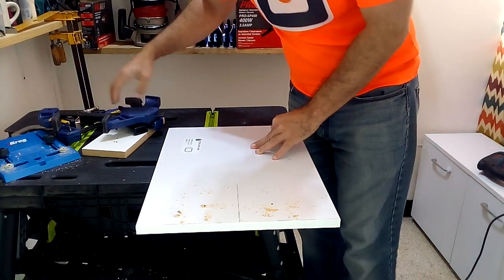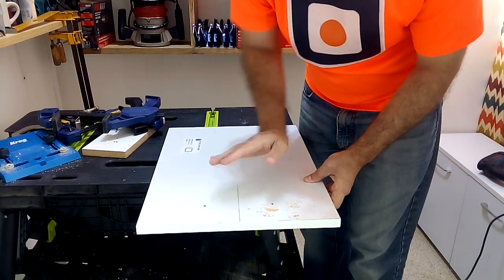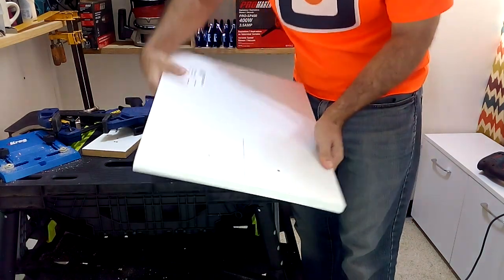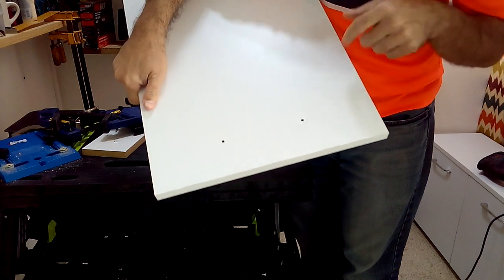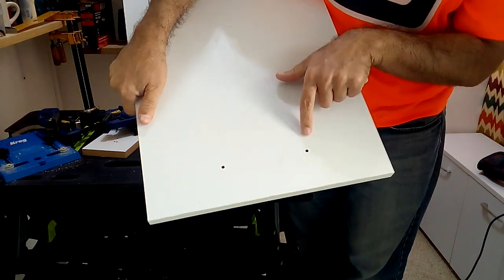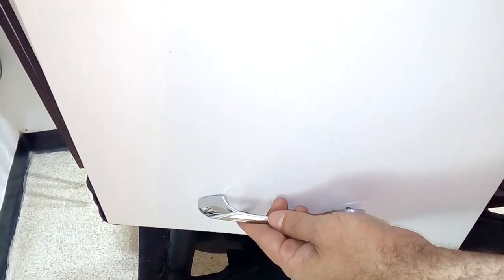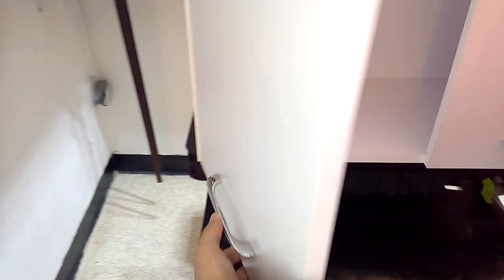Once we did the drilling I want to show you that because we used the MDF piece on the back, the laminate on both sides of our door is in perfect condition. Now we just have to put the two screws that hold the handle on the door of our cabinet.